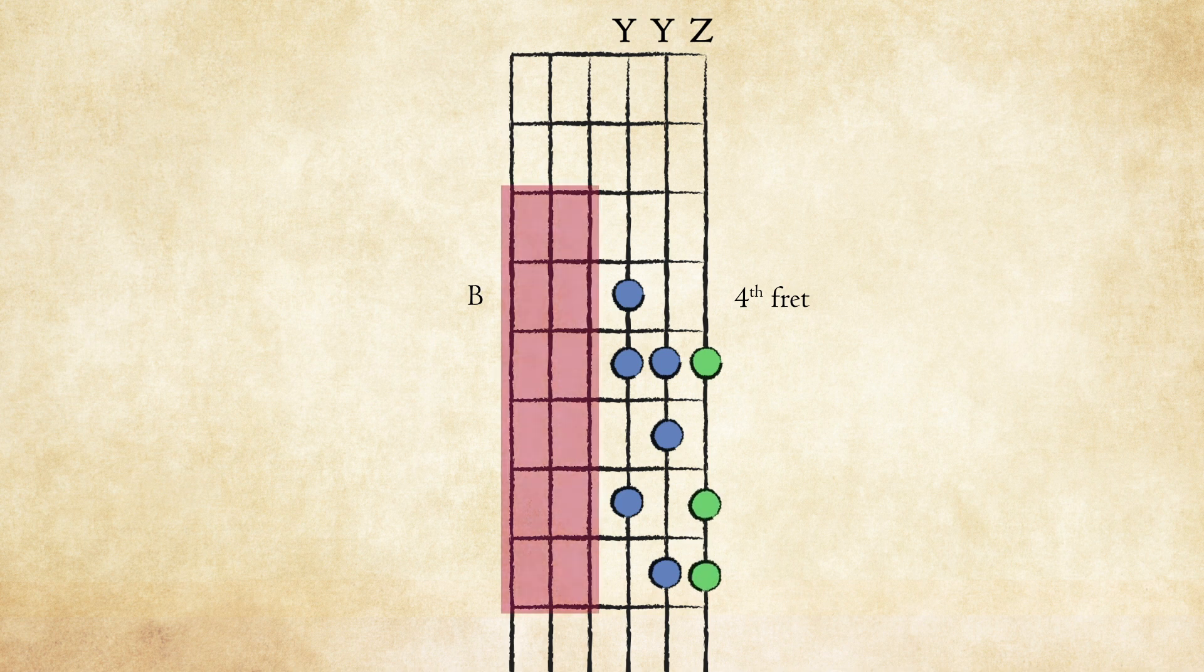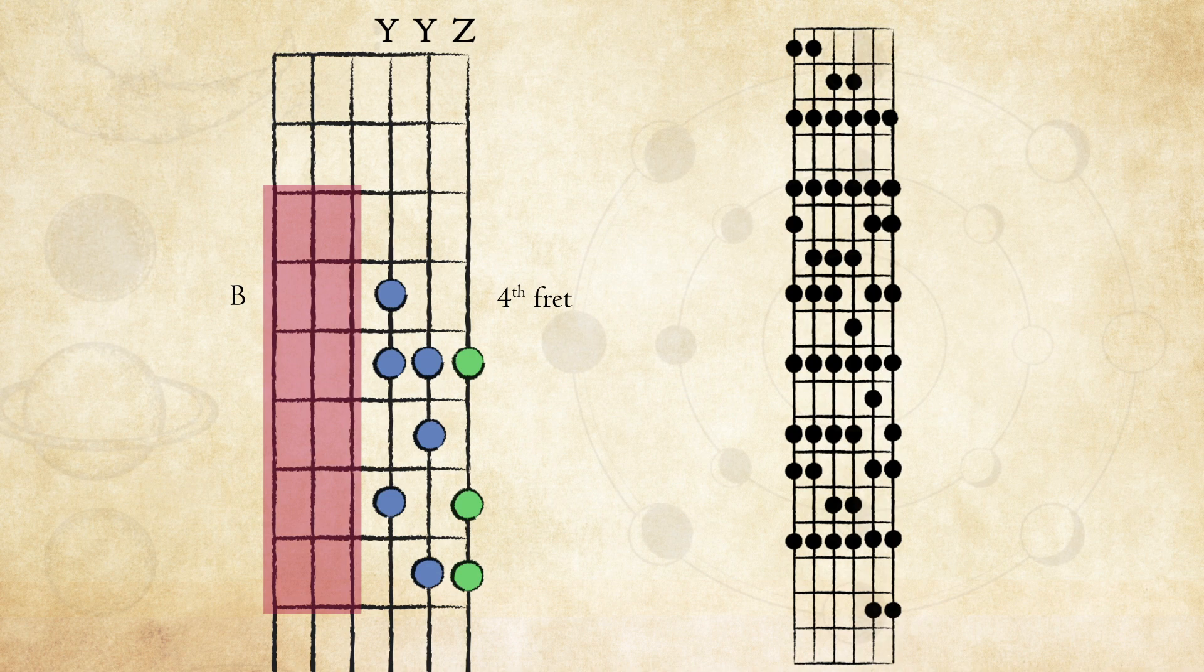In the previous video, we discussed building shapes on strings other than the 6th string. When we do this, we leave some empty space on the fretboard. In this video, we'll learn how to fill out that space by building patterns backwards. This will also help us learn to better navigate the grand unification pattern mentioned previously.